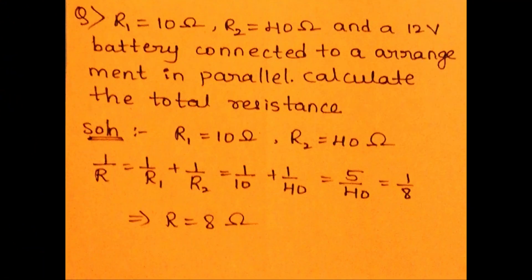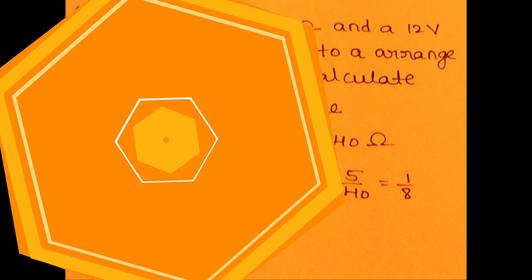Now, let us solve one problem. R1 equal to 10 Ohm, R2 equal to 40 Ohm, and a 12 volt battery connected as shown in the figure. Calculate the total resistance. In this figure, two resistors R1 and R2 are connected in parallel. Then 1 by R equals 1 by R1 plus 1 by R2. On solving, we get 1 by R equal to 1 by 8, which implies R equal to 8 Ohm.